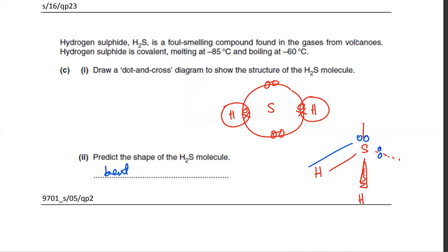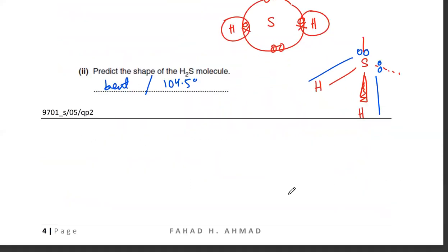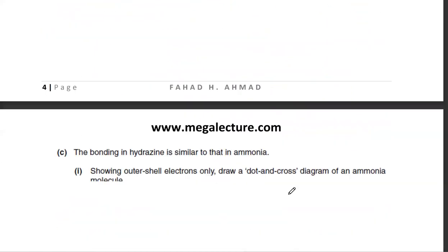H2S is V-shaped — bent — with a bond angle of 104.5 degrees. Count the lone pairs and number of bonds: two lone pairs and two bonds gives 104.5 degrees.